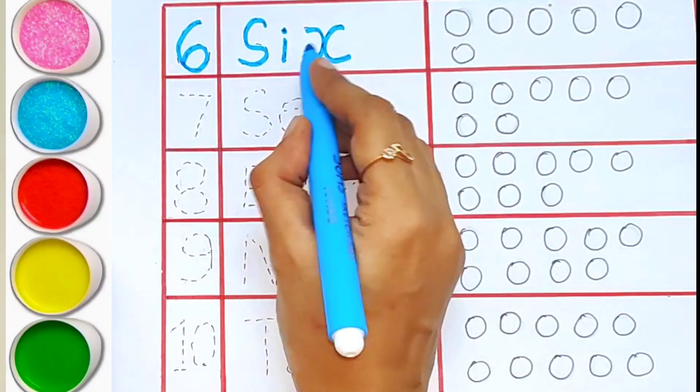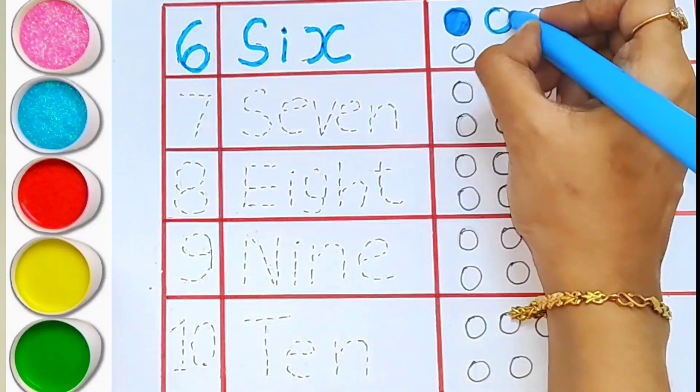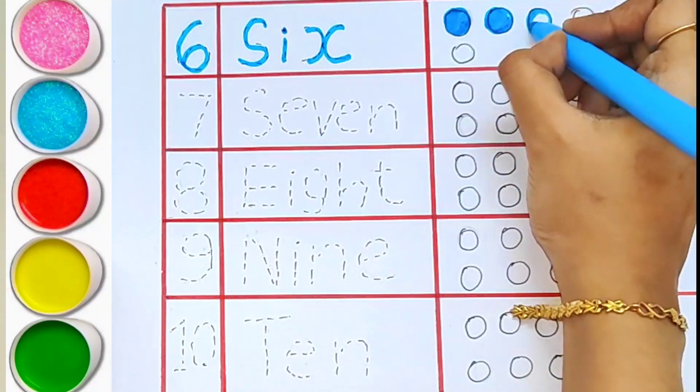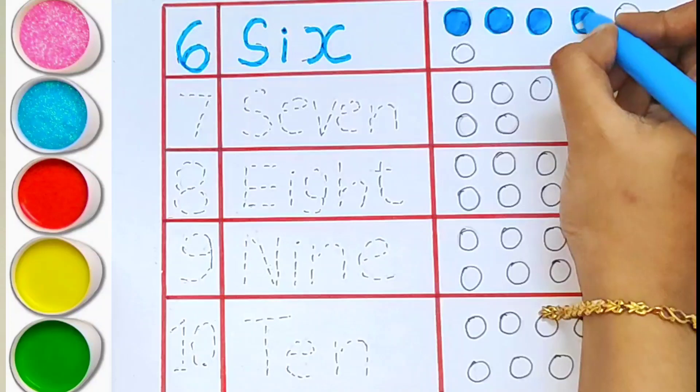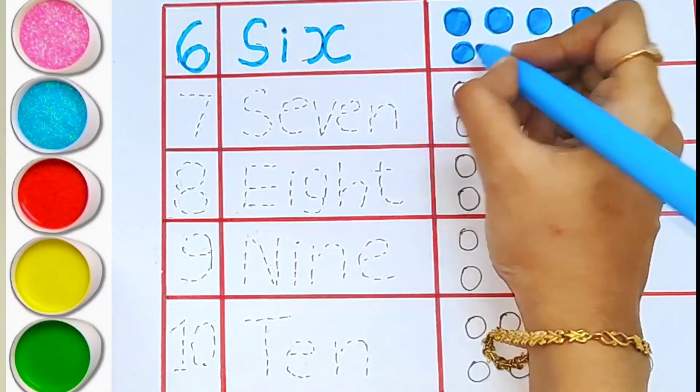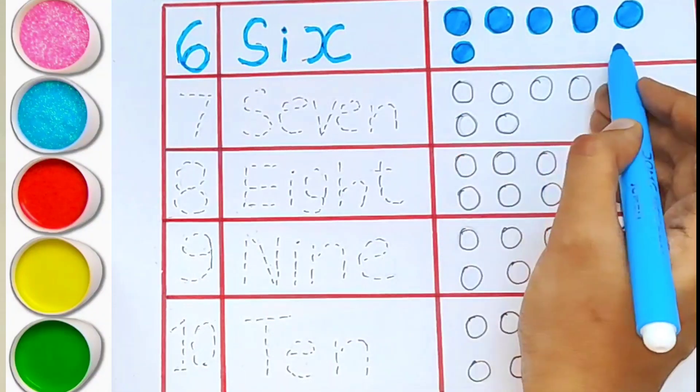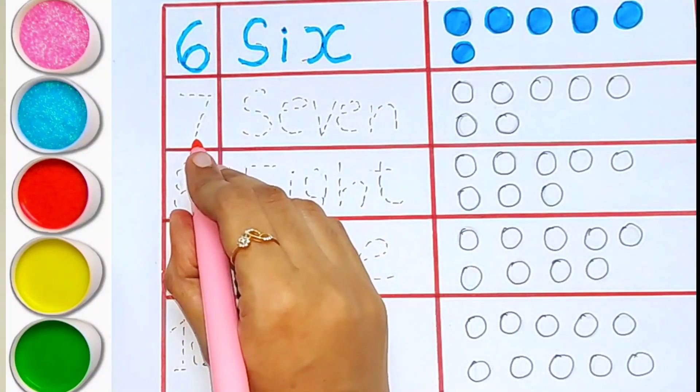S-I-X. Six. One, two, three, four, five, six. Six balls. Number seven.